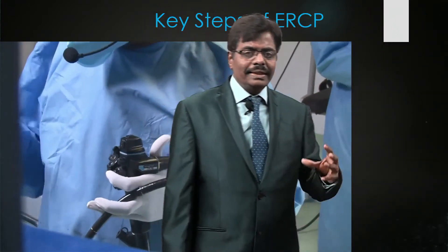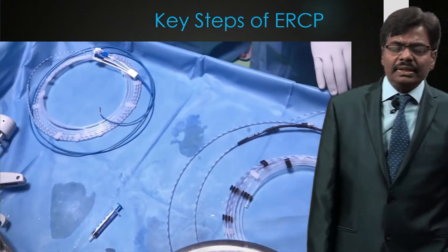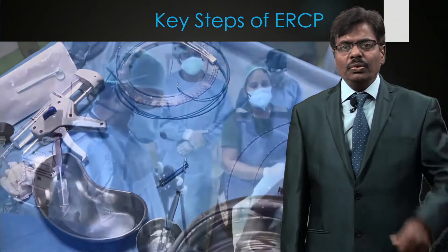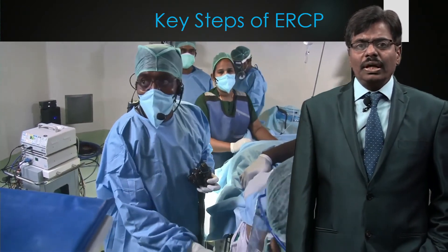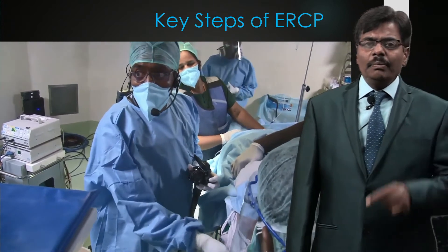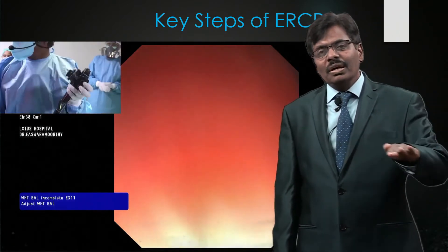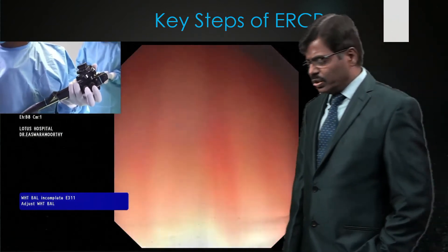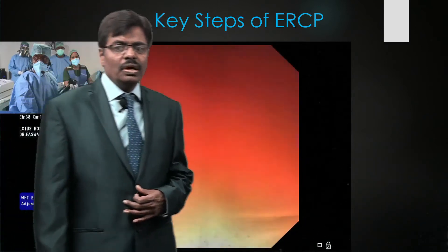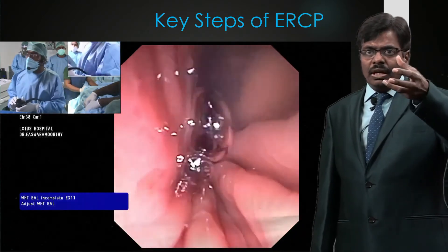Here I am comfortably holding the scope with a single hand while advising the anesthetist to give the injection. You can see the sphincterotome, balloon, and even the Allis gun on the trolley. The patient is prone — actually semi-prone as my assistant is lifting the patient's shoulder. I am now inside the oesophagus. Unlike a forward-viewing scope, the view is not very clear here.